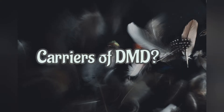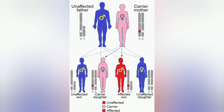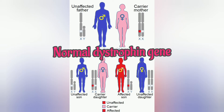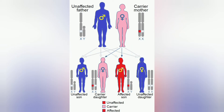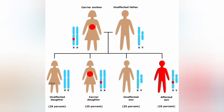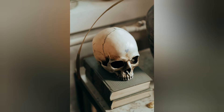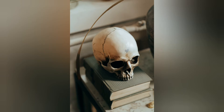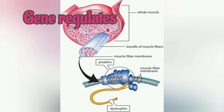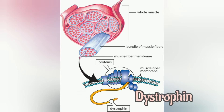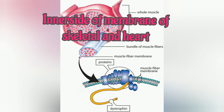Let's see what are the carriers of DMD. DMD carriers are females who have a normal dystrophin gene on one X chromosome and an abnormal dystrophin gene on the other X chromosome. Most carriers of DMD do not themselves have signs and symptoms of the disease, but a minority do. DMD is caused by changes, i.e. mutations, of the DMD gene on the X chromosome. The gene regulates the production of a protein called dystrophin that is found in association with the inner side of the membrane of skeletal and cardiac muscle cells.